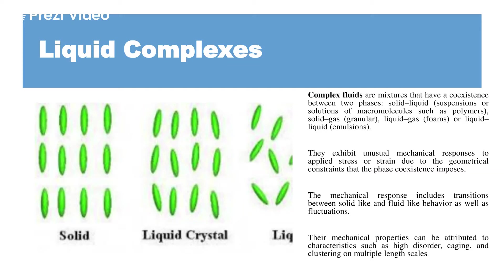These intermittent stages, which co-exist while transition is taking place from one phase to another, exhibit unusual mechanical responses. Since they have mixed properties, they are neither solid nor liquid. They exhibit different reactions and different mechanical responses to applied stress or strain. When we apply pressure, the substance does not behave like a solid or a liquid but shows totally different behavior.